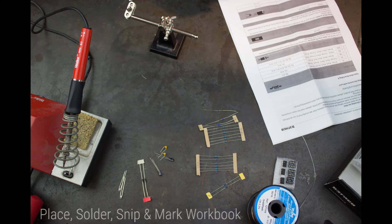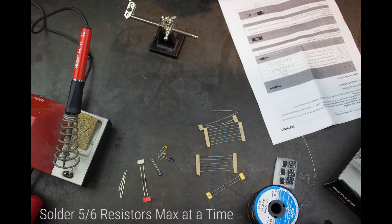Resistors are not polarised, which means they can be placed either way round on the board. I will place each group of resistors onto the board before soldering up to a maximum of about 5 or 6 resistors at a time. Any more than that and it just makes soldering awkward.